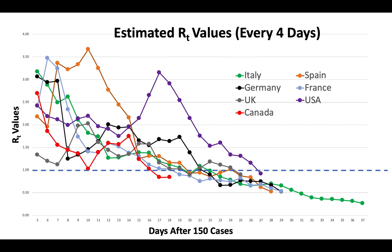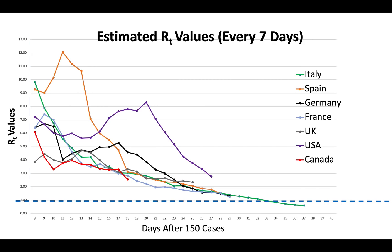If we look at the reproductive numbers over a 4-day period, you will see that all the countries are less than 1. Canada is the lowest at day 18. If you look at the reproductive number over a 7-day period, the virus has more time to spread, so you're going to get higher reproductive numbers — it's just simple math. The reproductive number for Canada in this period is about 2 to 3, and over 14 days it would be even bigger. The only country whose reproductive number has crossed 1 over a 7-day period is Italy. Canada has the lowest reproductive number, however, at day 18.